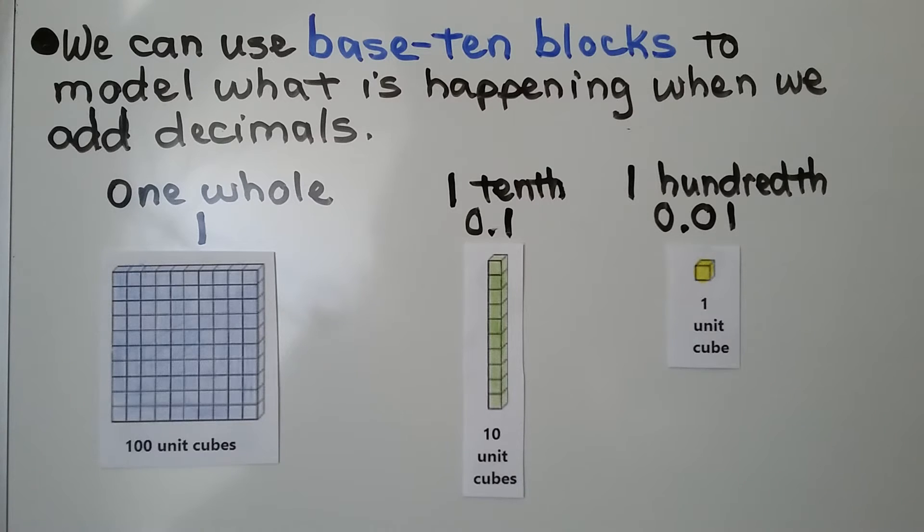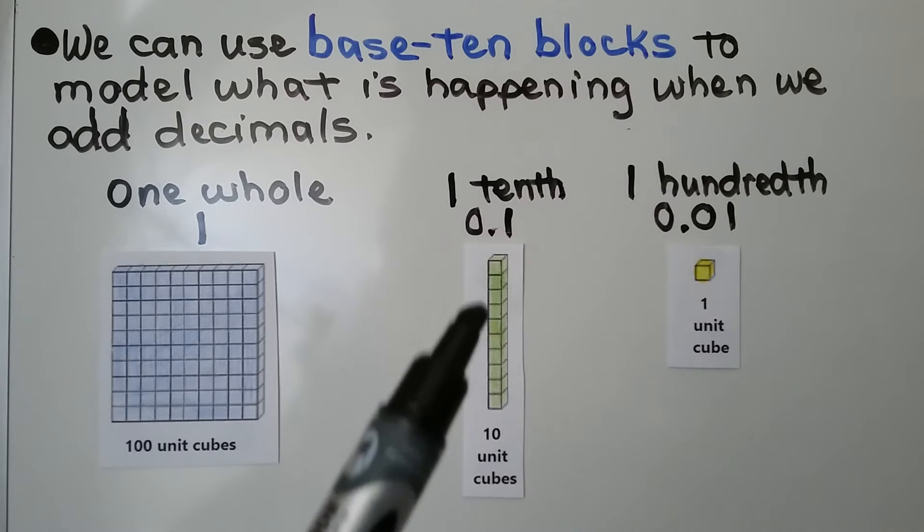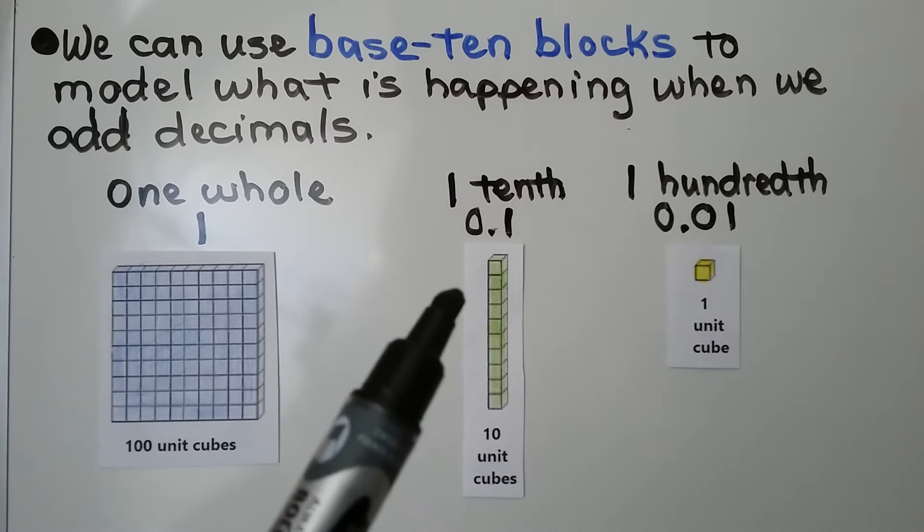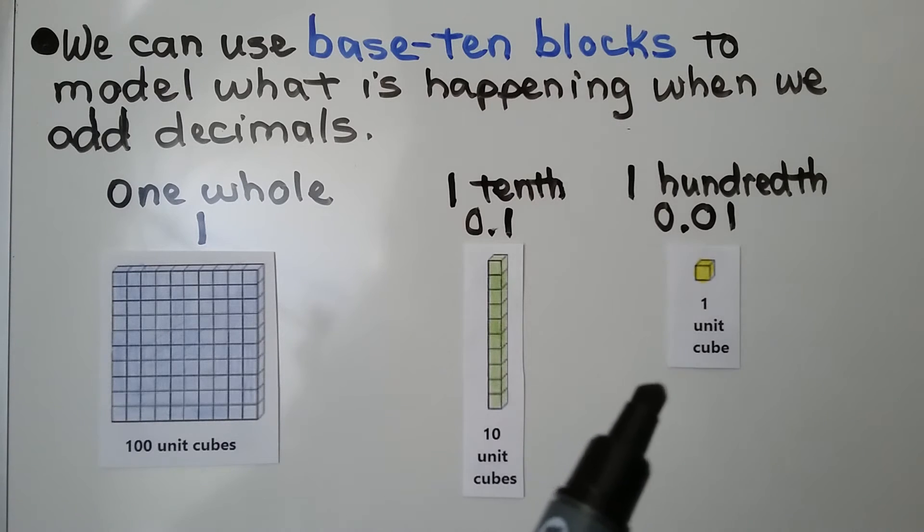We can use base ten blocks to model what is happening when we add decimals. We use a flat as one whole, that's 100 unit cubes. We use a long of ten as 1 tenth, and we use one unit cube as one hundredth.